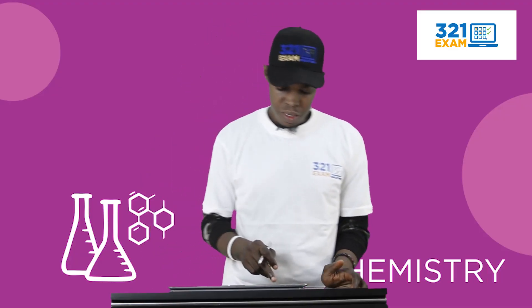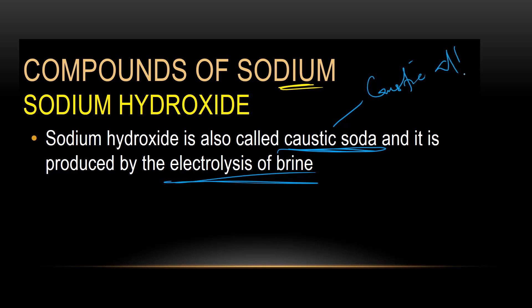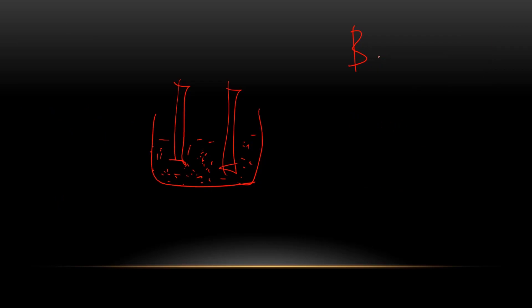Now let's go straight to compounds of sodium, which was given in your JAMB syllabus. What was given was sodium hydroxide. Sodium hydroxide is also called caustic soda or caustic alkali, and it is produced by the electrolysis of brine. Brine means aqueous sodium chloride solution.